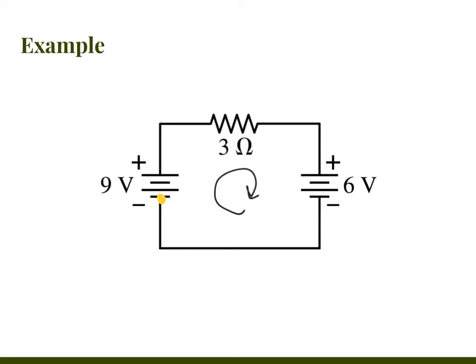Starting at that point, we move through a battery going from the negative to the positive terminal, which raises potential by 9 volts. Continuing along, we reach a resistor where voltage drops. Using Ohm's law, V equals I times R. The resistance is 3 ohms, so in the equation we have 9 volts minus 3I.